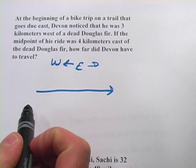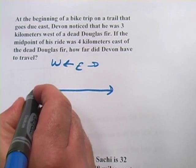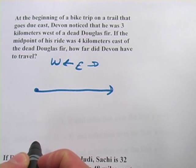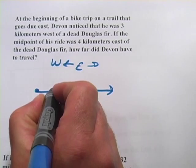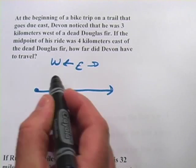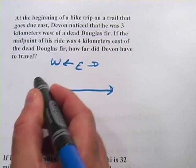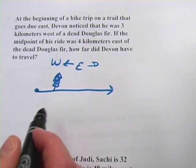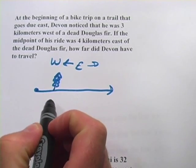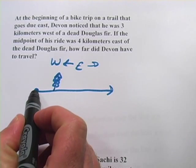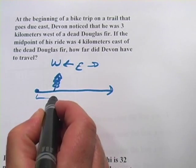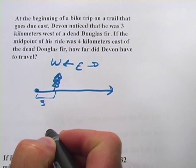At the beginning of the trail — let's say here's the beginning of the trail — Devin noticed that he was three kilometers west of a dead Douglas fir. West would be that way, so Devin is west of the fir tree. Here's the tree, and there's Devin. That's three kilometers distance.